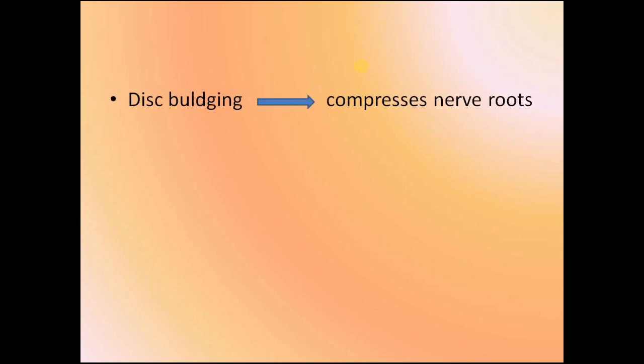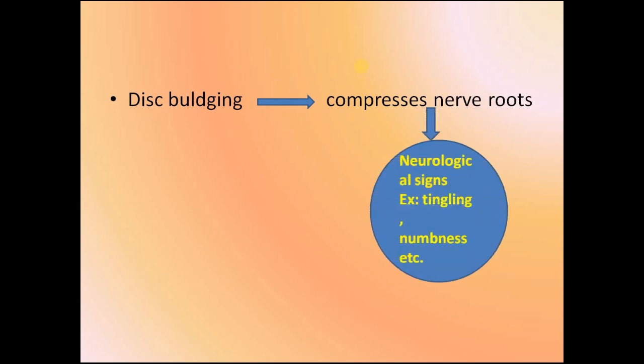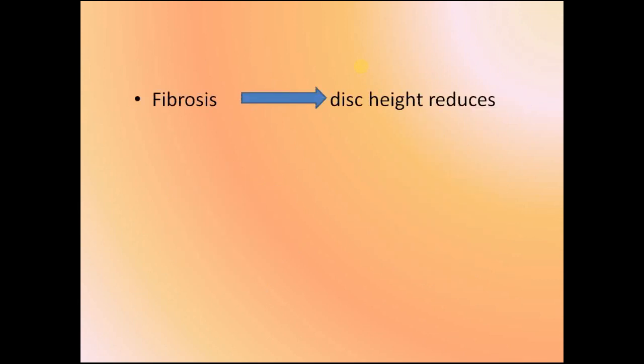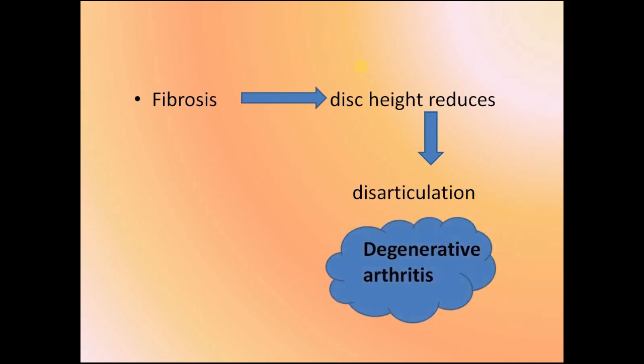Some other secondary changes are also associated with disc prolapse. As we know, there are nerve roots which exit from the vertebrae, but due to disc bulging it can compress the nerve roots, causing neurological symptoms like tingling and numbness. When a large disc protrusion occurs at the lumbar level, it may compress the cauda equina, which is known as cauda equina syndrome. In some cases, due to fibrosis the height of the disc reduces, leading to altered articulation between the facet joints and degenerative arthritis.